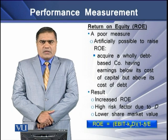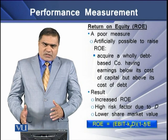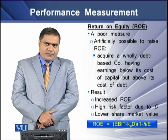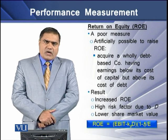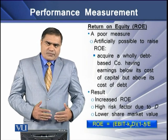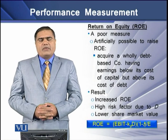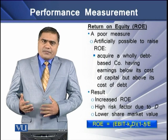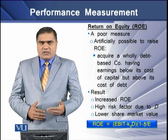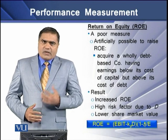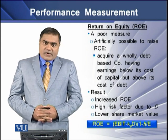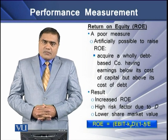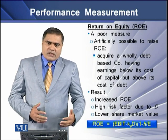The second return-based measure is return on equity, or ROE. Relatively, it is a weak performance measure because it can artificially be increased by management. An example of artificially increasing ROE is if the management of a firm acquires another firm that is wholly financed on debt, whose earnings are below its cost of capital but above its cost of debt. Three implications follow: first, ROE in this company will be increased; then, there will be a higher risk factor due to the wholly debt-based company; and finally, the lower market value of the company's shares will result in the market.